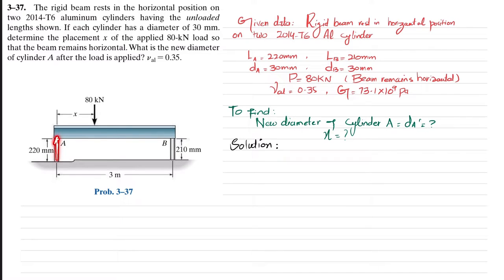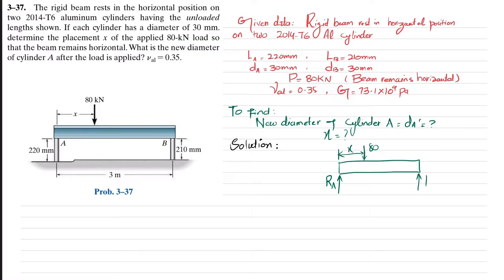The beam rests on cylinder A and cylinder B, so there will be a reaction force at points A and B. Let me draw the free body diagram. This is the beam, and this is the load of 80 kilonewtons applied over the beam. This distance is x, so the remaining distance is 3 minus x. The total length is 3 meters.